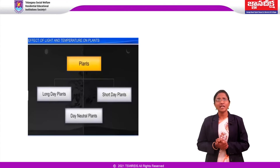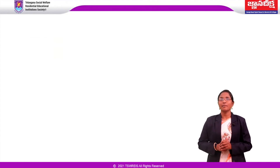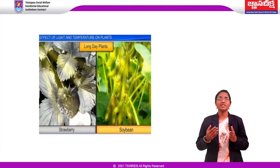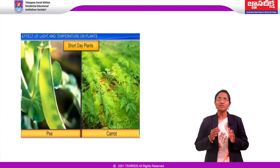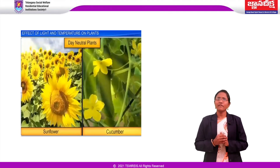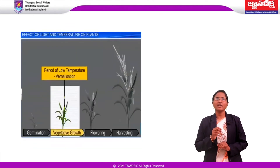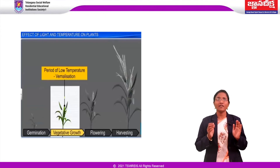Plants that require exposure to light for a period exceeding a well-defined critical duration are called long day plants. Plants exposed to light for a period less than this critical duration before flowering are called short day plants. Plants that have no correlation between light duration and induction of flowering are called day neutral plants. Vernalization is defined as the method of inducing early flowering in plants by pretreatment at low temperature; the qualitative and quantitative requirement of low temperature for flowering is called vernalization.